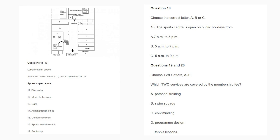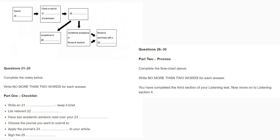That is the end of section 2. You now have half a minute to check your answers. Now turn to section 3. Section 3. You will hear a conversation between a research student, Jeremy, and his supervisor. They are talking about the process of having a research project published in a journal. First, you have some time to look at questions 21 to 25.